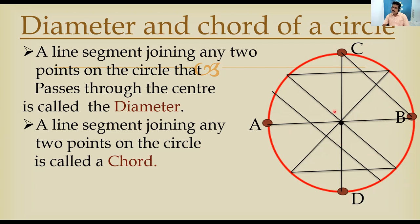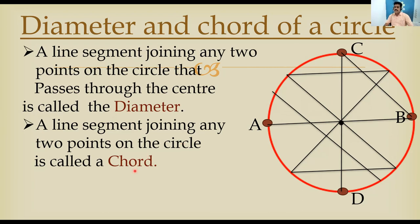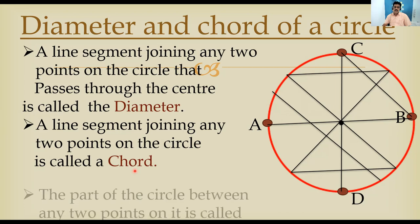Among all chords, which is the longest? The chord that passes through the center of the circle is the longest chord — that is the diameter. So the diameter is the longest chord of the circle. To summarize: a diameter is a line segment joining any two points on the circle that passes through the center.